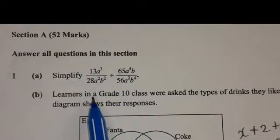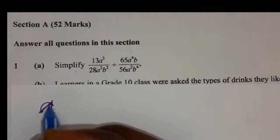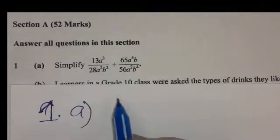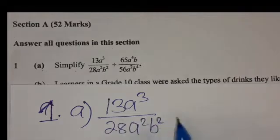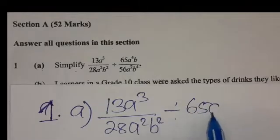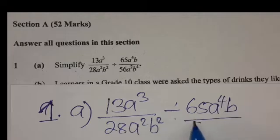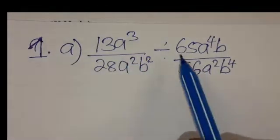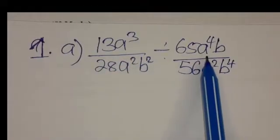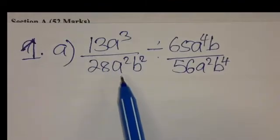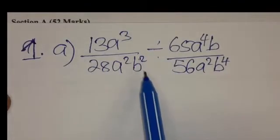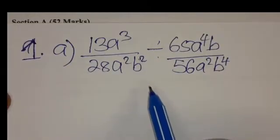So we have this expression here. When they say simplify, it means that the expression is looking very large and they want us to reduce it so that it looks simple. The expression is 13A cubed over 28A squared B squared, divided by 65A to the power 4B over 56A squared B to the power 4. This expression is made up of two fractions with a division symbol in between. We are going to use the same rules we use when dividing fractions.